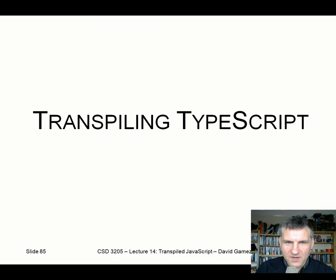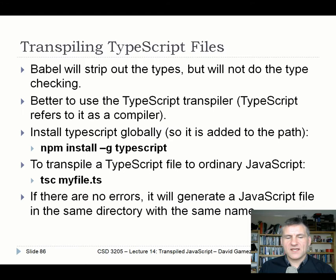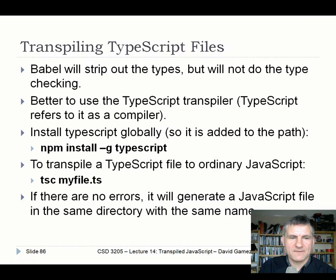I've explained how TypeScript works — now I'm going to explain how you can actually transpile TypeScript into JavaScript. You could transpile TypeScript with Babel, which will strip out the types, but it won't do type checking. That's why you need to use the TypeScript transpiler if you want to use types properly. Install TypeScript globally with npm install -g typescript. If you have a single file to transpile, type tsc followed by the filename, and if there are no errors it generates a JavaScript file in the same directory.